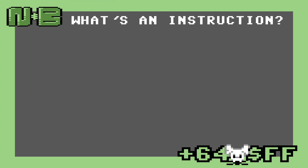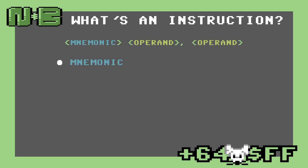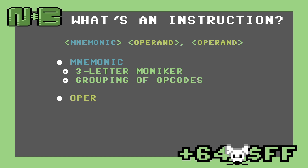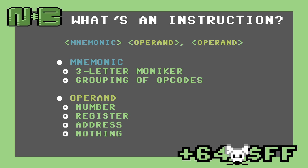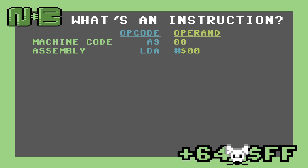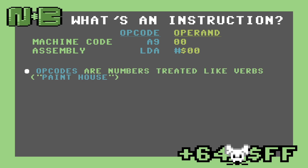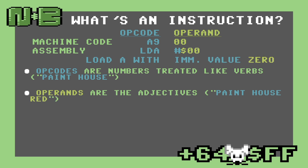So what's an instruction? Every instruction is composed of a mnemonic and optionally two operands. A mnemonic is a three-letter moniker that refers to a grouping of opcodes. An operand can be a number, a register, an address, or nothing at all since they can sometimes be optional. Think of instructions as English-like statements we make to the computer. Opcodes are numbers treated like verbs, such as 'paint house.' Operands are the adjectives, such as 'red' in 'paint house red.' You could also argue that operands are the subject in the sentence, or what to operate on.